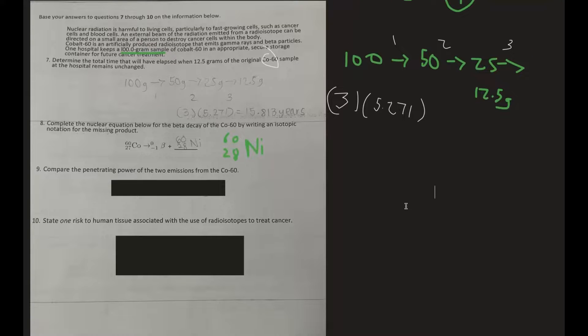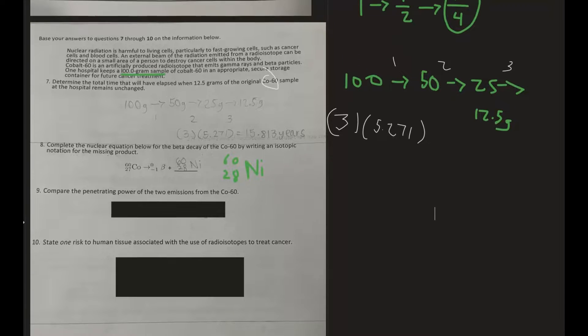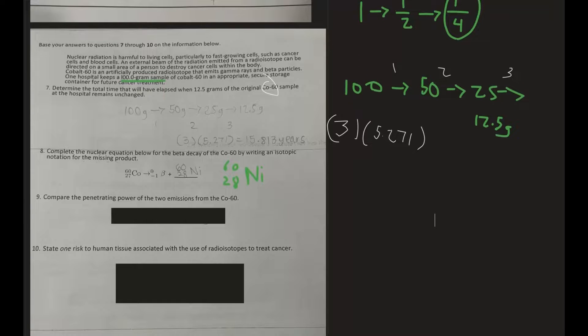Number nine: compare the penetrating power of the two emissions from cobalt-60. Cobalt-60 is an artificially produced radioisotope that emits gamma rays and beta particles.